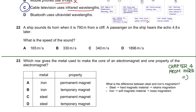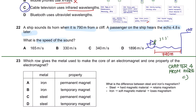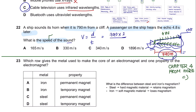Question 22. A ship sounds its horn when it is 790 m from a cliff. A passenger hears the echo 4.8 seconds later. What is the speed of sound? The sound travels to the cliff and returns, so the total distance is 790 × 2 = 1580 m. Using speed = distance ÷ time: 1580 ÷ 4.8 gives a value of 330 meters per second.